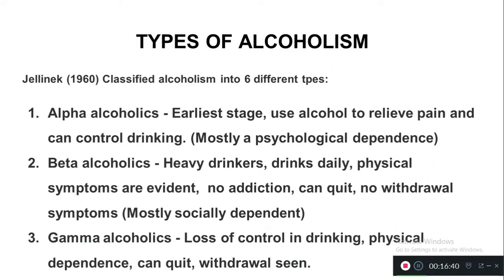What are the types of alcoholism? There are six different types given by Jelinek in 1960. First, alpha alcoholics — the earliest stage when a person starts drinking to relieve day-to-day body pain and psychological pain. These people can stop drinking and control their drinking pattern; they have only psychological dependence, drinking when they feel sad or emotionally rejected.